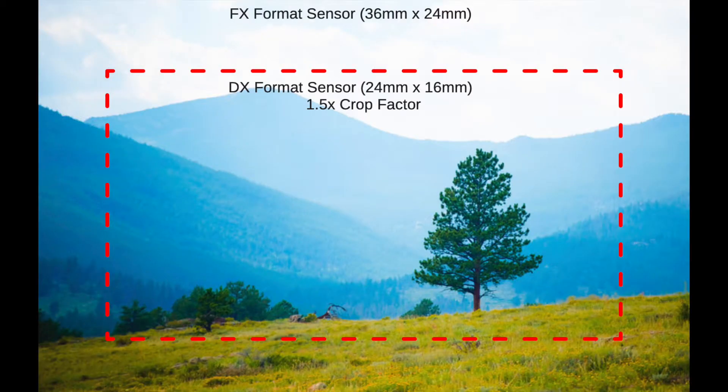When you go to a DX camera, the DX camera has a similar sensor but it is smaller — it's a crop sensor. Because of the crop sensor, the size of the sensor is smaller. In this case it is 24mm by 16mm. So if you compare an FX camera to a DX camera, you can easily see the size difference.